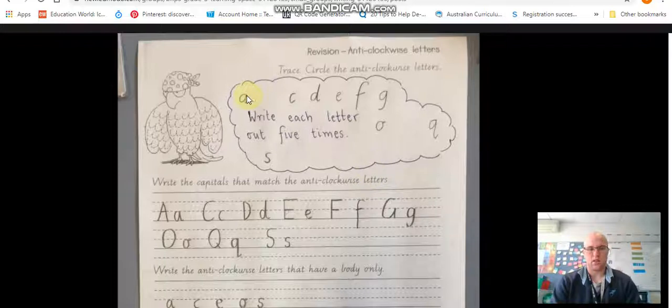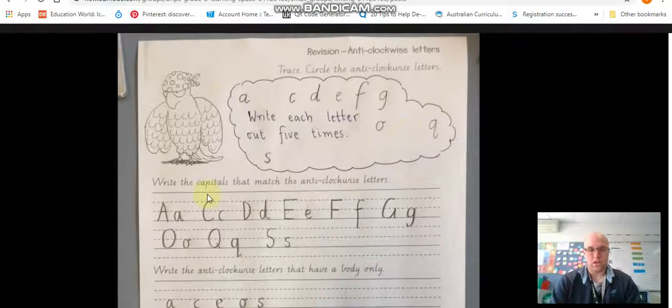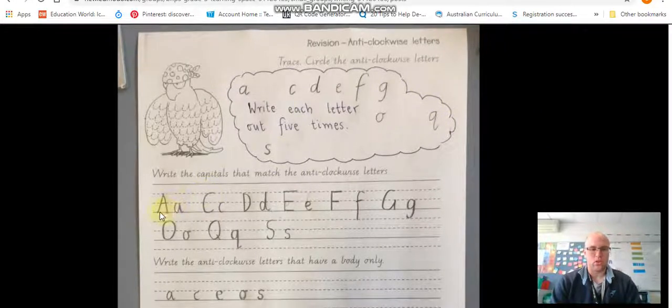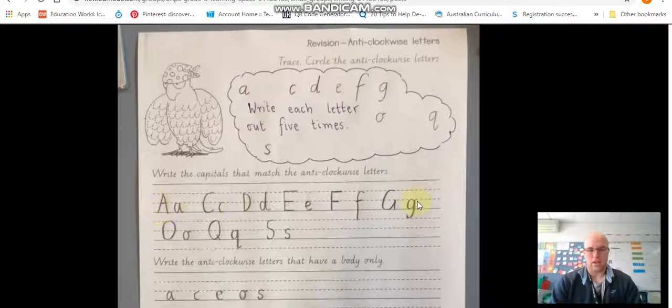They're called anti-clockwise letters because they go in this direction. They start here and they go this way. Clockwise letters they started here and went that way. Okay and clockwise is that way anti-clockwise is that way. Hopefully you can see my mouse there.